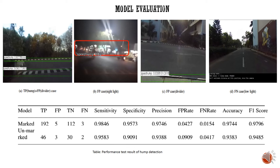For model evaluation of the object detection part, we analyzed various cases. There is a false positive case during night light and another false positive due to a road divider that is in line with the hump. Under low lighting conditions we observed a false negative case, and another false positive due to the divider with a true positive also present in the same image. With these we calculated sensitivity, specificity, precision, and false positive rate. We achieved a detection accuracy of 97.44% for marked hump detection and 93.83% for unmarked hump detection.